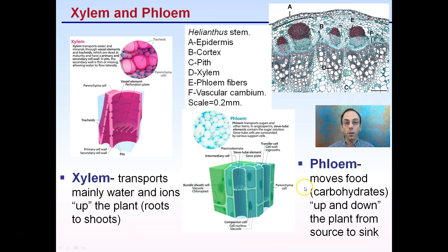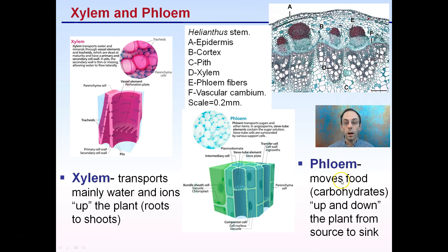Phloem, though, moves carbohydrates — the byproduct of photosynthesis, the sugars. It moves those carbohydrates up and down the plant from source cells to sink cells. Source cells are like the leaves that are first making those sugar molecules, and they're being transported to sink cells. Those sink cells could be developing roots, flower buds, or a growing part of the plant that needs a lot of energy. That's what the phloem is doing — moving up and down from the site of production to wherever it needs to be transported.